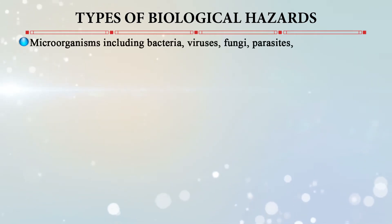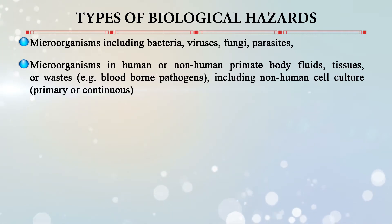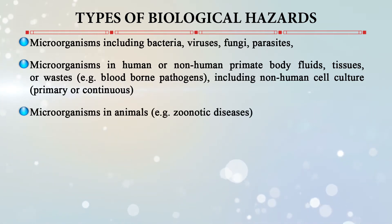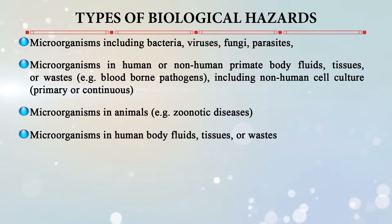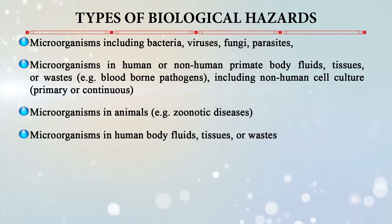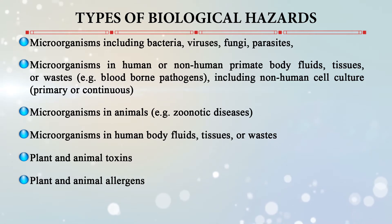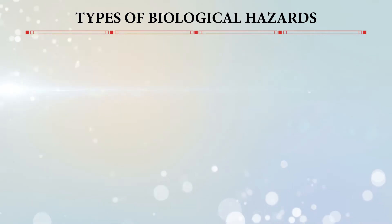The types of biological hazards include various categories of biological organisms. Microorganisms can include bacteria, viruses, fungi, and parasites. Microorganisms found in human or non-human primate body fluids, tissues, and waste can also be blood-borne pathogens, including non-human cell cultures. Microorganisms can be present in animals transmitting zoonotic diseases. Biological hazards also include infectious agents, plant and animal toxins, plant allergens, animal products, and genetically engineered organisms and their products.